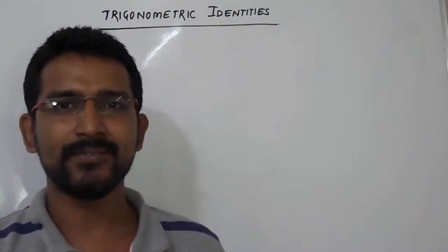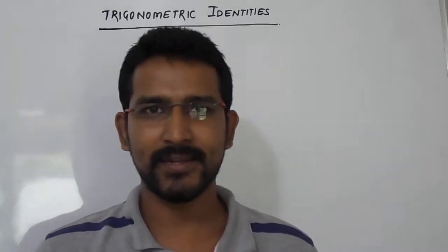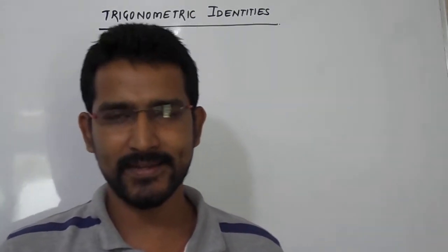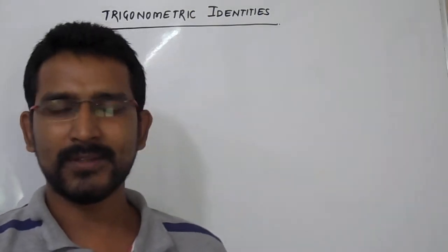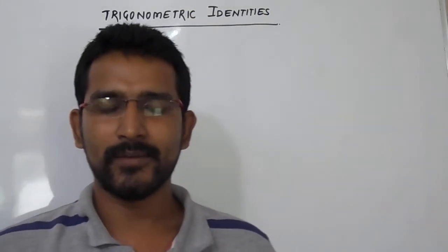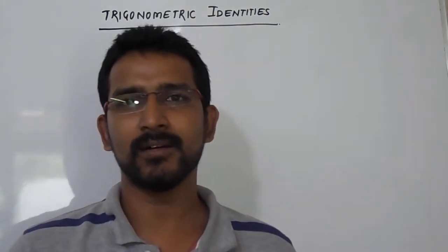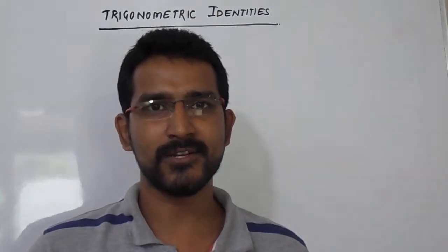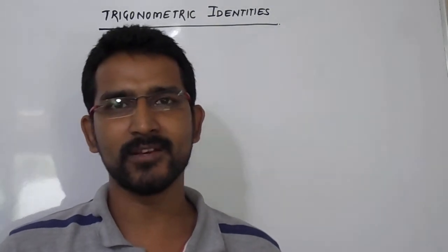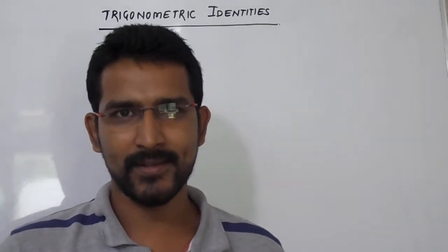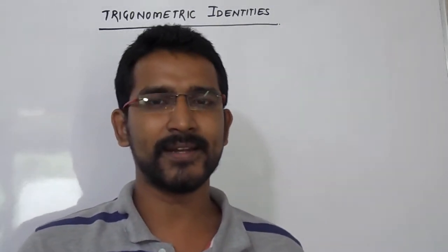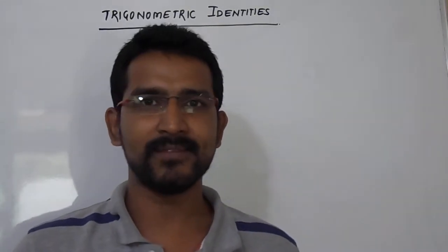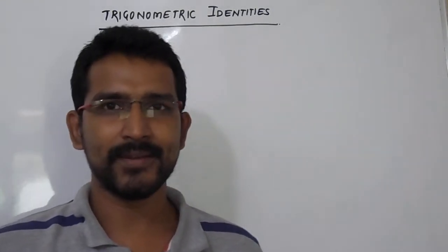Hello, today in this session we are going to see the trigonometric identities and how to derive those identities. For that, you have to see our earlier session that is based on trigonometric ratios in terms of coordinates of a point. Then we got certain results that we are going to use here to derive the trigonometric identities.